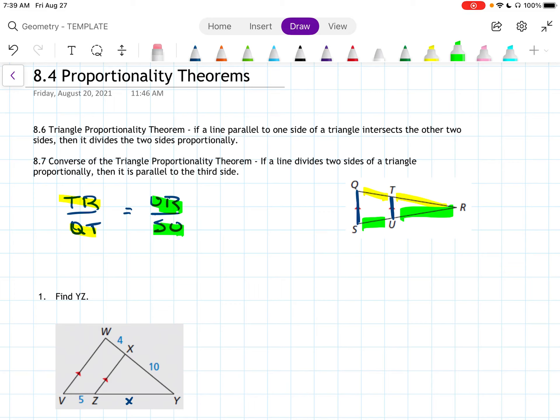And I don't think I read it, but 8.7 is the converse. If a line divides two sides of a triangle proportionally, then it is parallel to the third side. So that would be saying something like, if you were given this, then you could draw this picture.